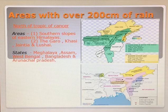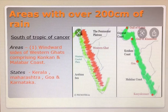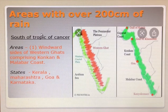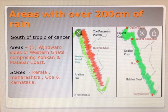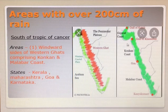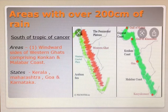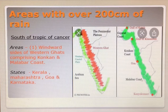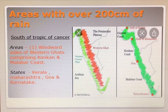Now towards the south, areas with over 200 cm of rain — below the Tropic of Cancer. That is the windward side of the Western Ghats comprising the Konkan and the Malabar coast. This is the Konkan coast and this is the Malabar coast, where we receive heavy rainfall. States like Goa, Karnataka, Maharashtra, and Kerala — these are the places where you receive heavy rainfall.